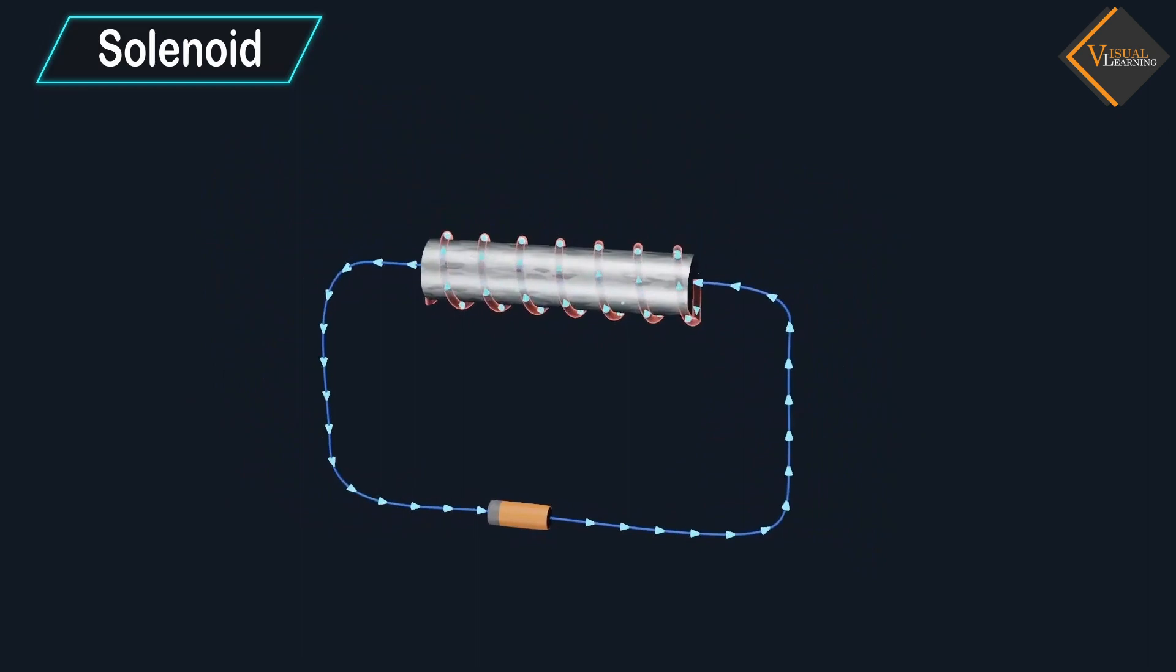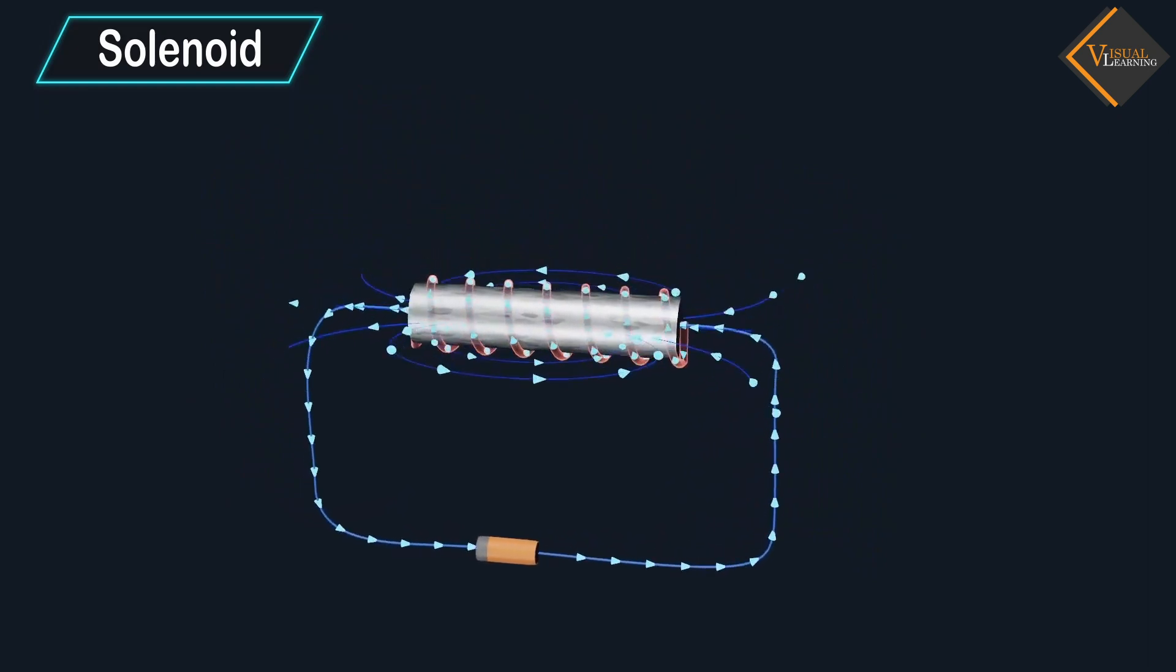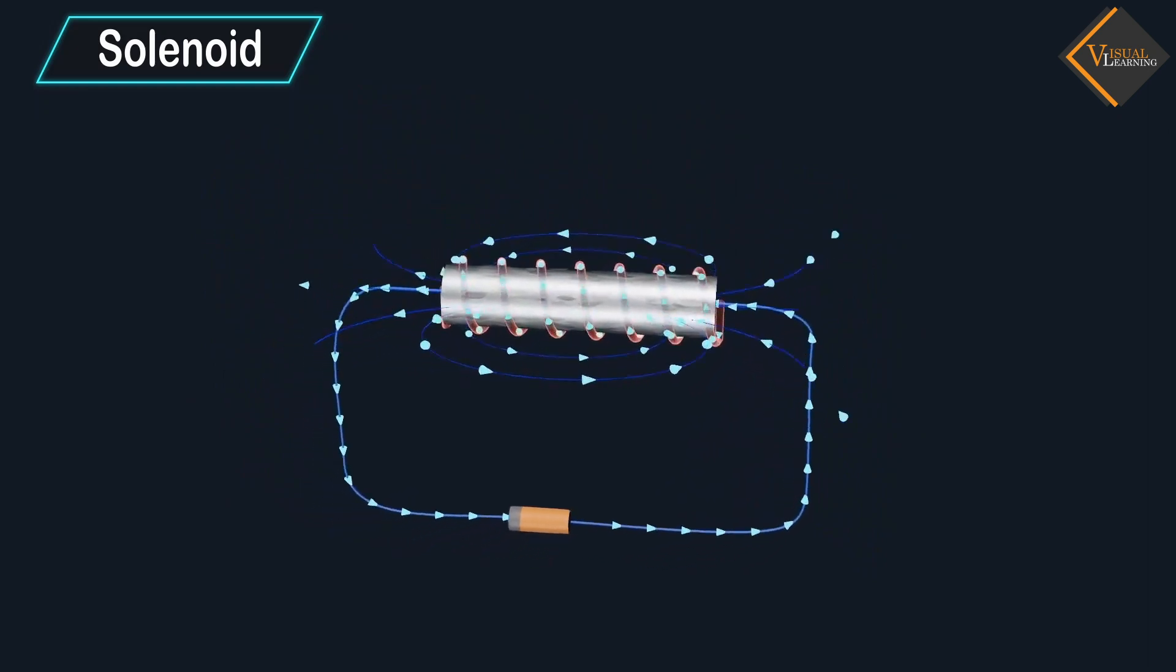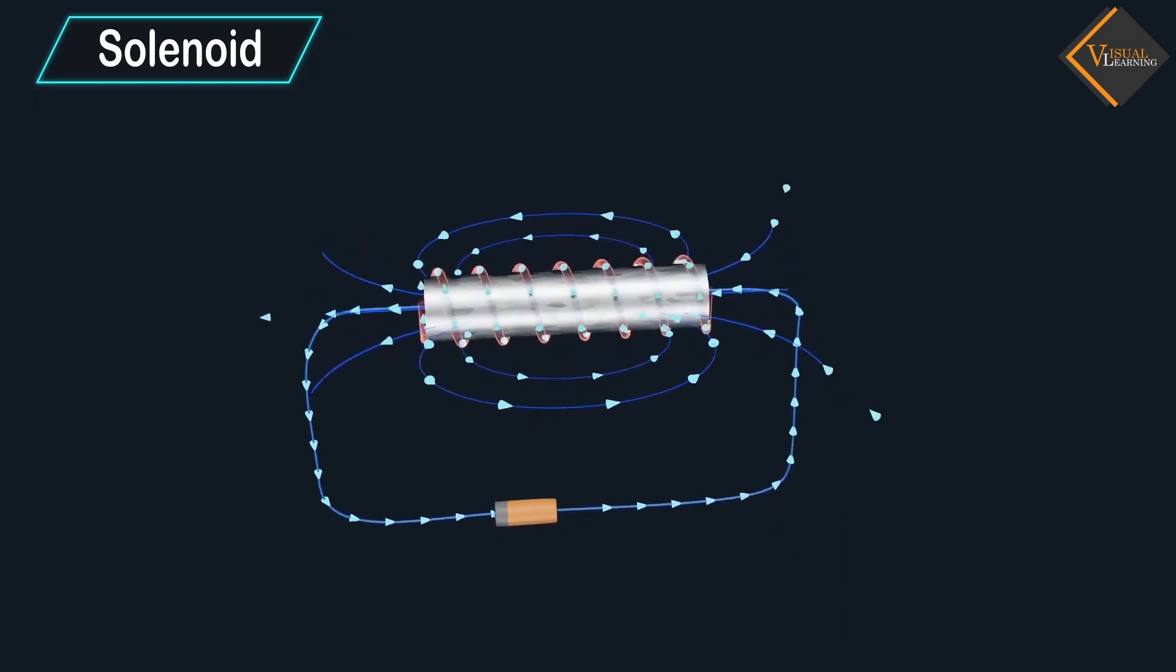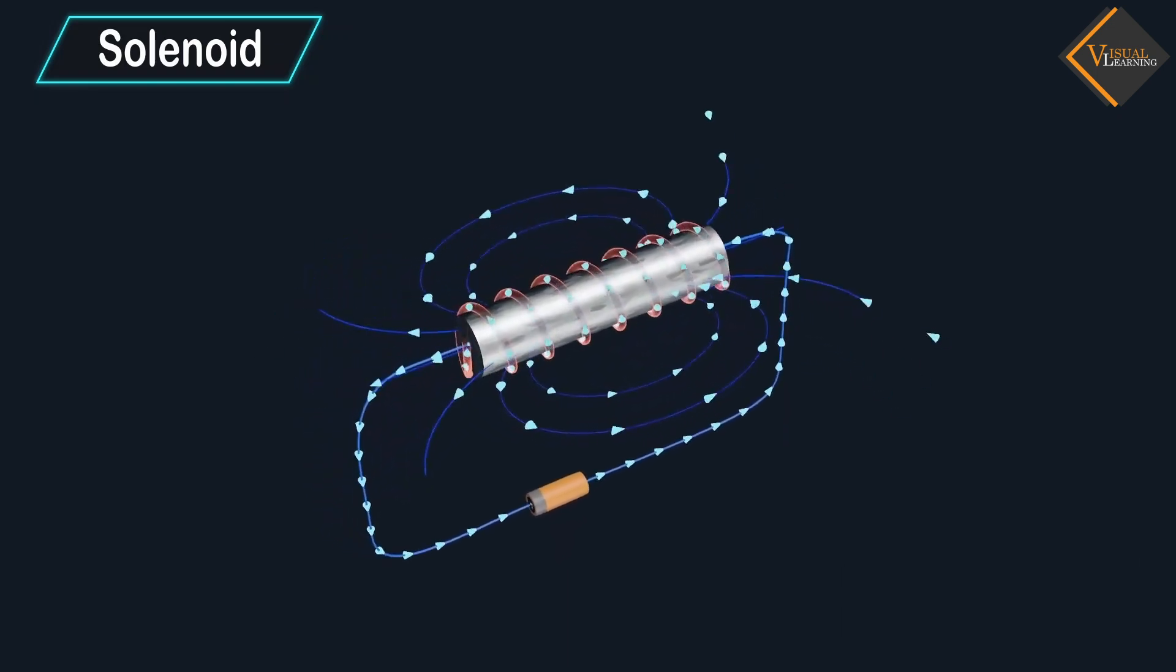Solenoid generates a controlled magnetic field by changing the current value. Now let's understand solenoid through this animation.